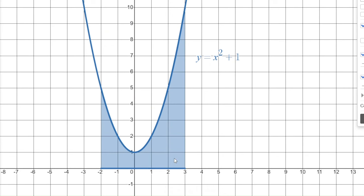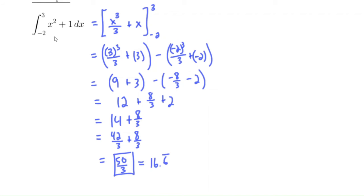It's always good to check if the answer looks reasonable. You can start counting square units in the graph, and it's pretty reasonable that the area here is around 16 or 17 — it's 16 and 2/3 square units. So that's the fundamental theorem of calculus: it tells you how to calculate a definite integral, which is an area or net signed area between the graph and the x-axis, by finding an antiderivative and plugging in the endpoints and subtracting.